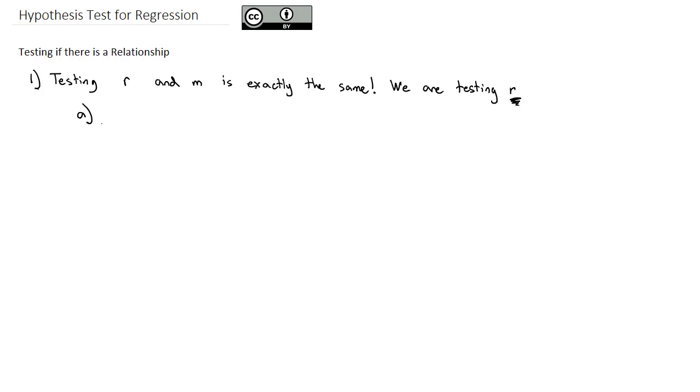When we're testing r, the Pearson product correlation coefficient, the null hypothesis is going to be that ρ, the population parameter for the correlation coefficient, is equal to zero. And for the alternative hypothesis, it's ρ is not equal to zero. To put in words what this means, ρ equals zero means there is no relationship between the two variables. If we say ρ is not equal to zero, then we're saying there is a relationship. And that's what we're trying to prove.